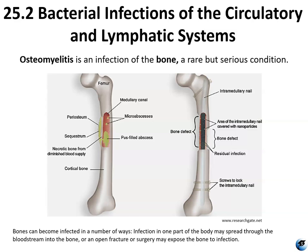Osteomyelitis is an infection of bone. Symptoms may include pain in a specific bone with overlying redness, fever, and weakness. The long bones of the arms and legs are most commonly infected, especially in children, while the feet, spine, and hips are most commonly infected in adults. The cause is usually bacterial, though rarely fungal. It may occur by spread from the blood or surrounding tissue. Risks include diabetes, intravenous drug use, prior removal of the spleen, and trauma to the area. Treatment usually involves antimicrobials and surgery, and those with poor blood flow may require amputation. Treatment outcomes are generally good if caught early.